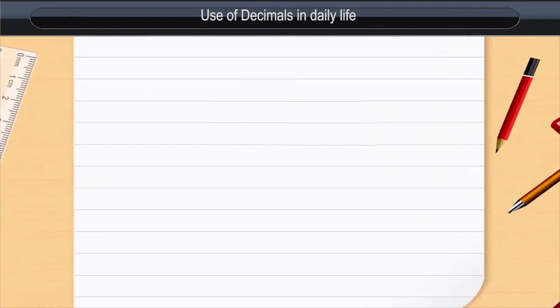Use of decimals in daily life. We know that 100 paise is equal to a rupee. But if we want to write 1 paise in decimal, we divide 1 by 100.